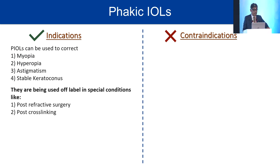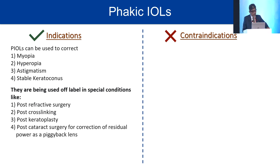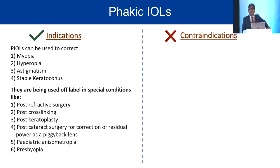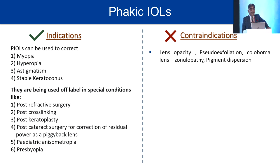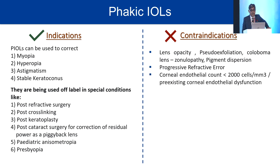Contraindications include any lens opacity, pseudo-exfoliation, damaged zonules, coloboma lens, zonulopathy, pigment dispersion, and progressive refractive error. Corneal endothelial cell count must be more than 2,000 cells per square millimeter, with no pre-existing corneal endothelial dysfunction or dystrophy. Glaucoma—especially angle-closure glaucoma—is contraindicated. It is contraindicated in less than Grade 2 angles, which is very important. Pregnancy and nursing are also contraindications, as with other refractive surgery procedures.